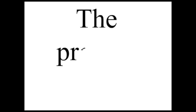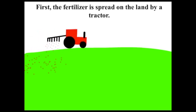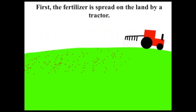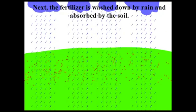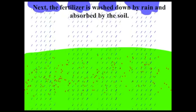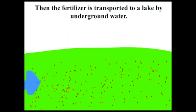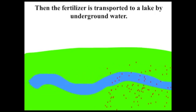This animation shows the process of eutrophication and how the nitrates and phosphates end up in the water and what effect they have on the water once they get there. Fertilizer is rich in nitrates and phosphates as these help the plants to grow, and this fertilizer can be washed away by rainfall and transported to a lake or an isolated body of water.